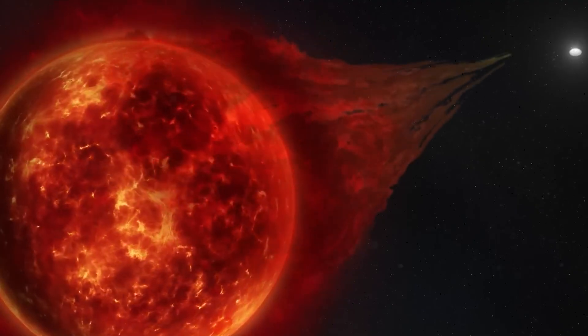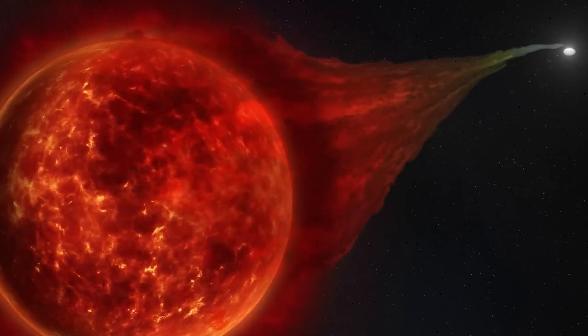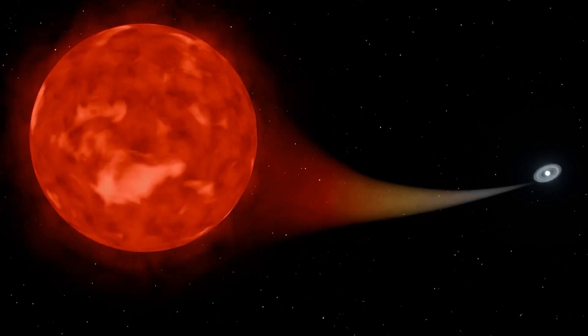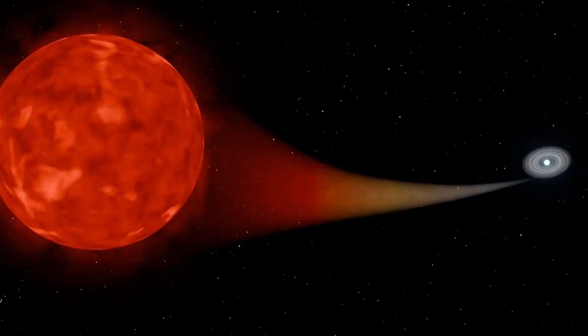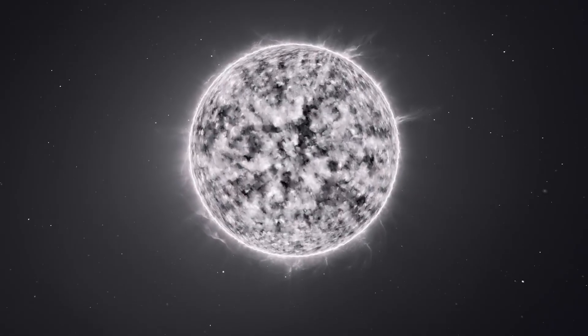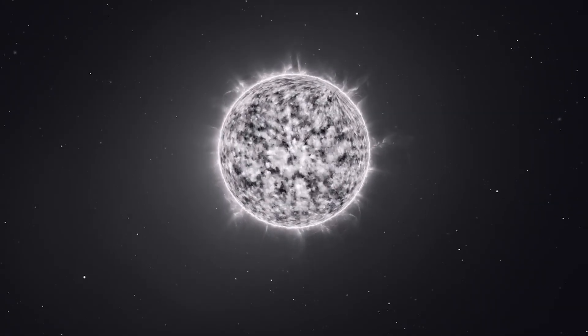An unusual and dangerous process is unfolding between these two stars. The white dwarf begins to siphon matter from its companion, like a cosmic predator hunting its prey. A flow of matter moves from the surface of the red giant to the white dwarf, forming a bright accretion disk around it. This process lasts for decades until a critical mass of material accumulates on the surface of the white dwarf.